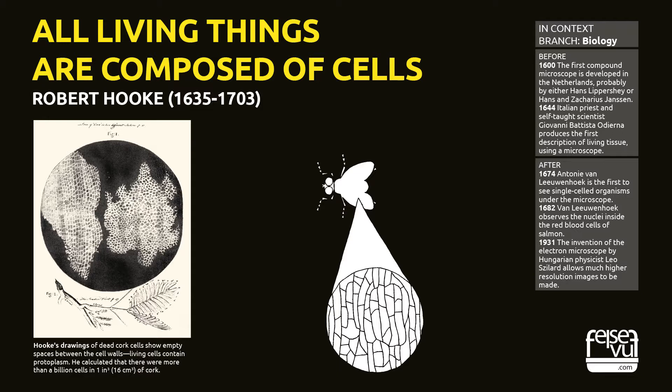After 1674, Antonie van Leeuwenhoek was the first to see single-celled organisms under the microscope. In 1682, Van Leeuwenhoek observed the nuclei inside the red blood cells of salmon. In 1931, the invention of the electron microscope allowed much higher resolution images to be made.